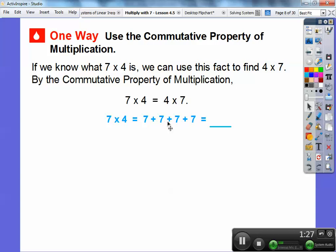If you forget what seven times four is, you can just add up seven plus seven plus seven plus seven four times. Seven plus seven is fourteen. Fourteen plus seven is twenty-one, and then twenty-one plus seven is going to get us twenty-eight.